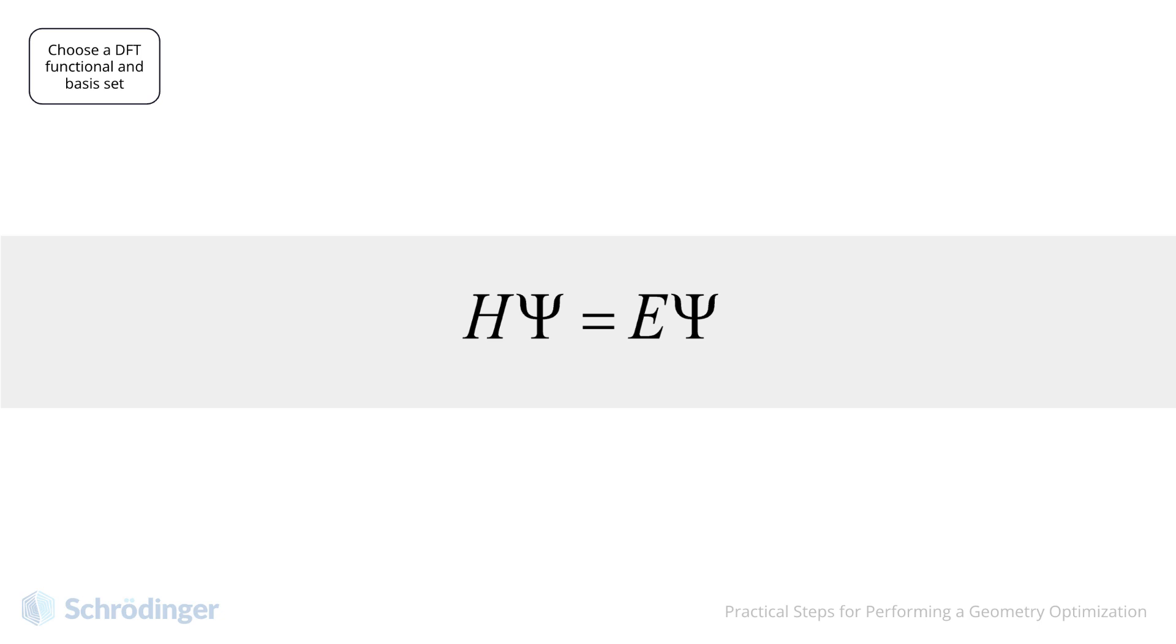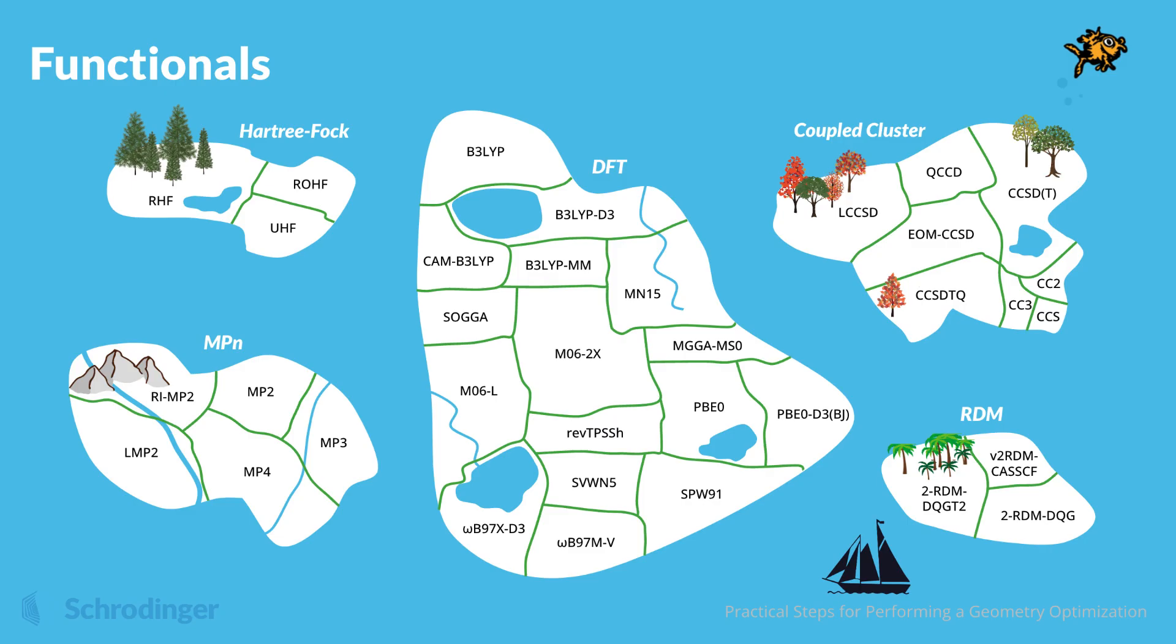Every functional can be thought of as a different flavor of H and E in the Schrödinger equation. Each functional defines the energy of the molecule. Theoretically, there exists the exact functional, which would correspond to the exact H. Unfortunately, this exact functional is unknown. That is why we have multiple functionals, none of which is exact, but each of them strives to be as close to the exact functional as possible. In the last 40 years or so, scientists have gotten closer and closer to the exact functional by using better and better approximations.